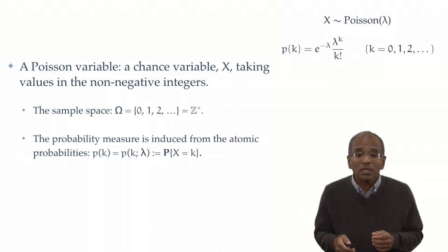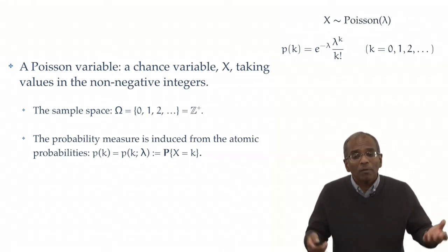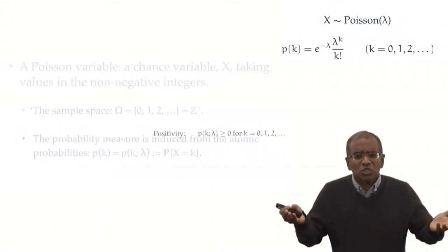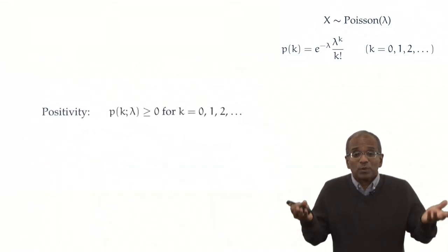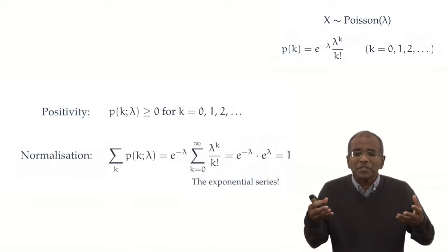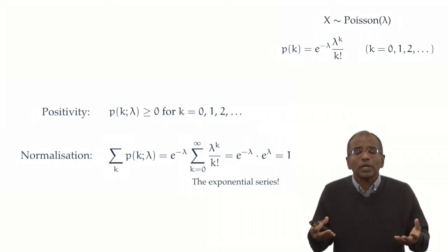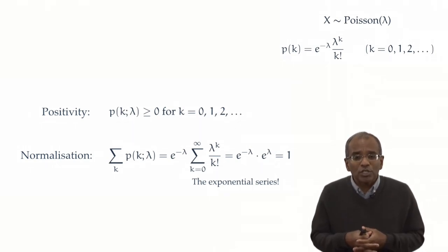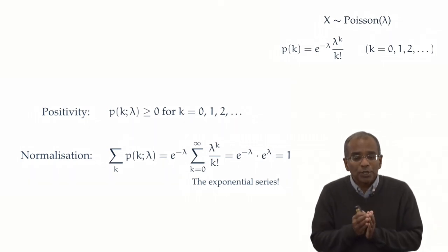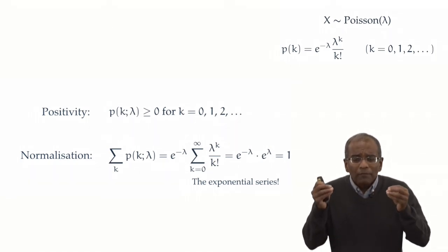But, of course, we have already done this. We have seen this in Tableau 6.1 as an example of a mass function. What do we have to verify? Well, first, positivity—but this is trite. The exponential function is always positive. And second, normalization. But this, as we've seen, arises naturally as a consequence of the exponential series. The sum of lambda to the k over k factorial is exactly e to the power lambda, and therefore this series is properly normalized to unit.